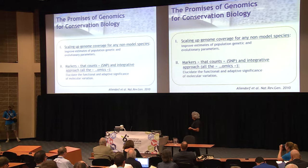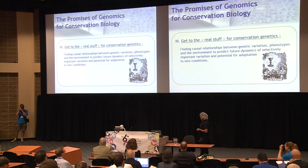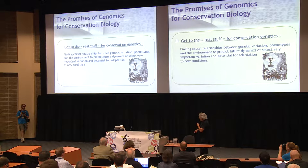And ultimately, we want to do that to reach the holy grail of conservation genetics — to get to the real stuff, which is finding causal relationships between genetic variation, phenotypes, and the environment, to predict future dynamics of selectively important variation and potential for adaptation to new conditions. That's really ultimately where we want to head.